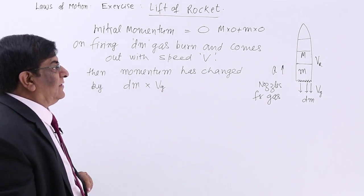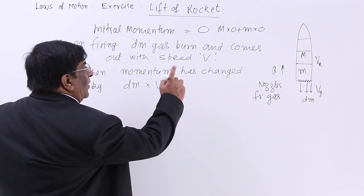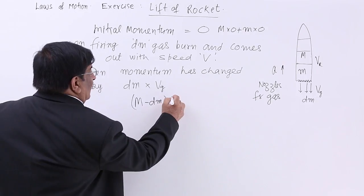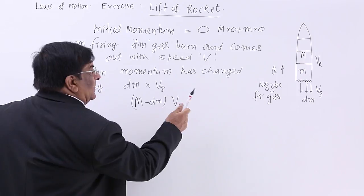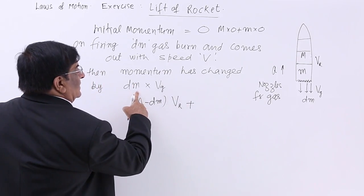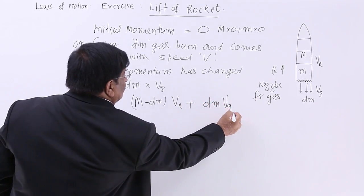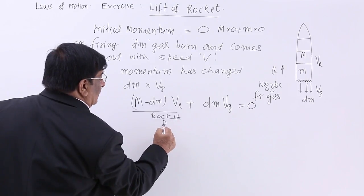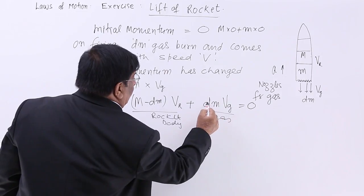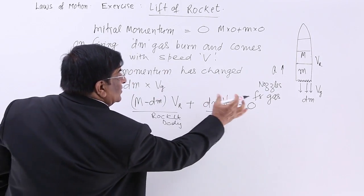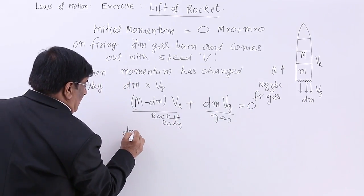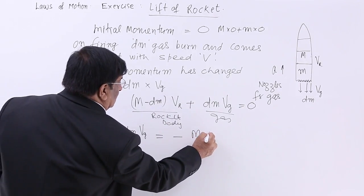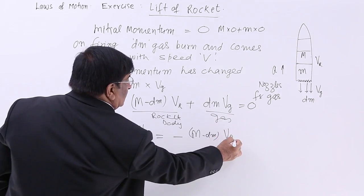This is the change of momentum in the gas. The total should be zero. So momentum of rocket (m minus dm) multiplied by velocity of the rocket plus momentum of the gas dm×v_g should again be zero. So dm×v_g equals minus (m minus dm) velocity of rocket.